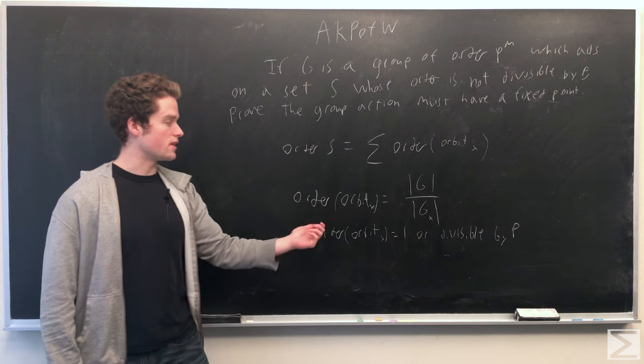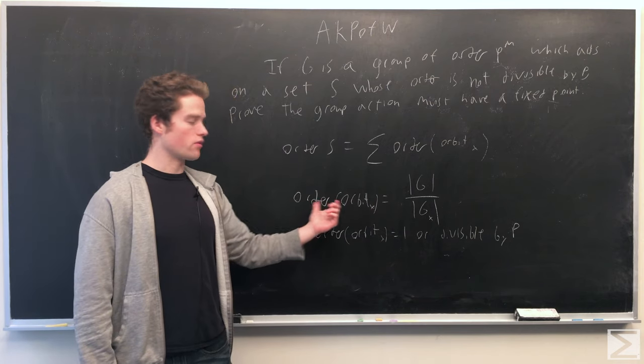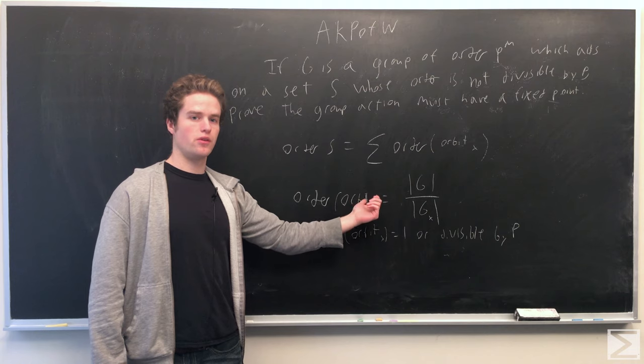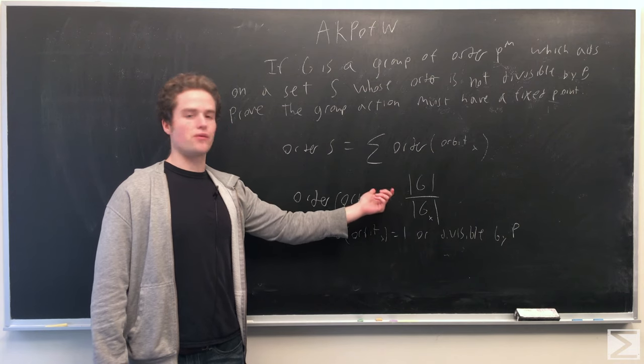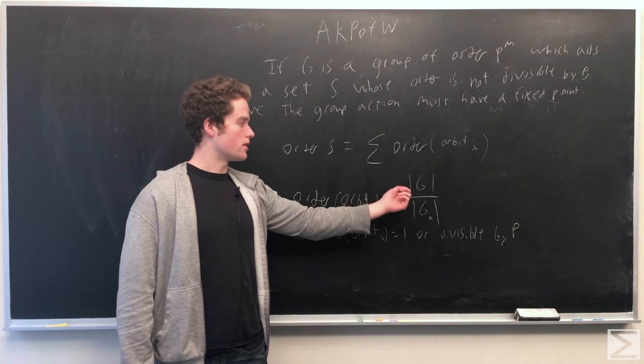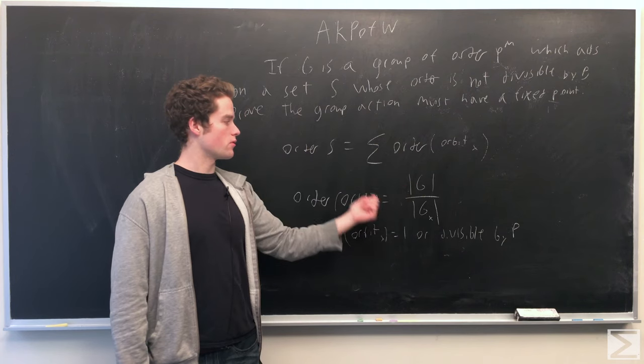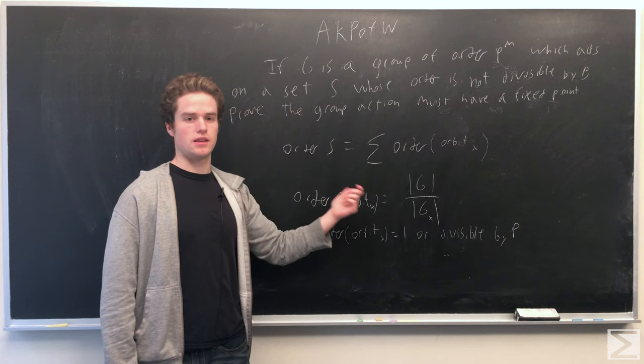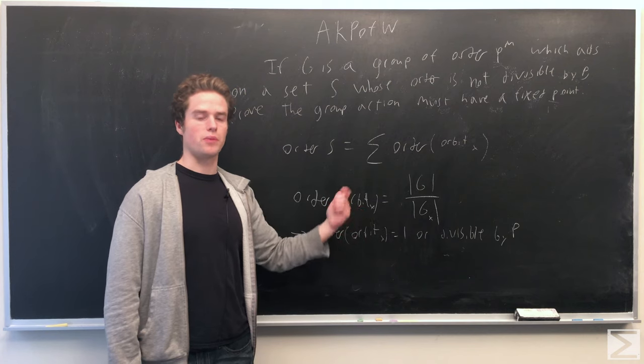And so from this, we see that the order of the orbits are some divisor of the order of G. And G is a prime power, so the different orders are equal to either 1 or some power of p.